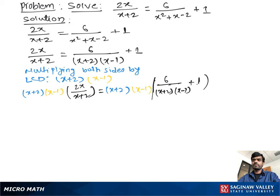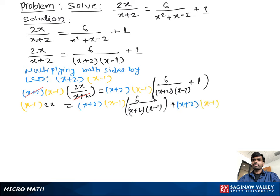Now, as you see, x plus 2 and x plus 2 cancel out, so we can write x minus 1 times 2x is equal to — now using the distributive property — we multiply x plus 2 times x minus 1 times 6 over x plus 2 times x minus 1, plus x plus 2 times x minus 1.